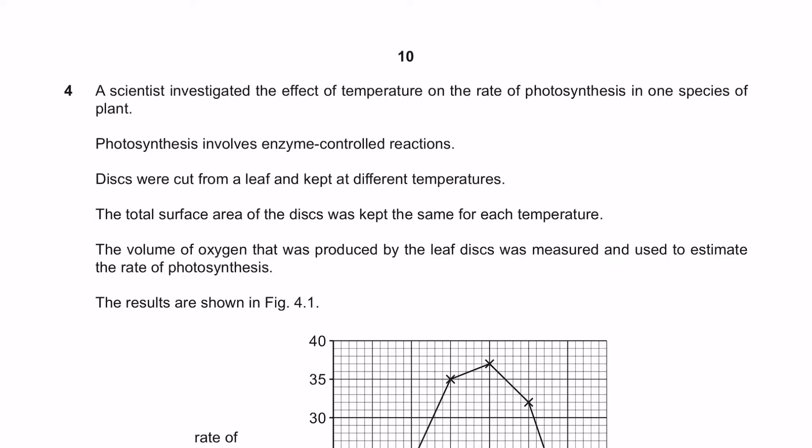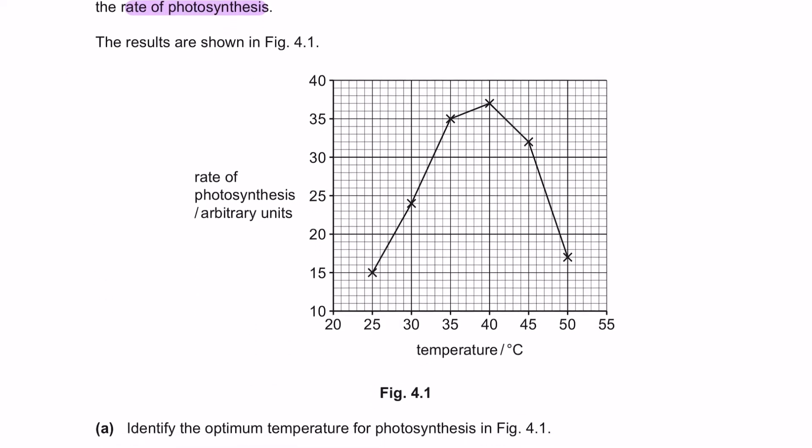Question 4. A scientist investigated the effect of temperature on the rate of photosynthesis in one species of plant. Photosynthesis involves enzyme-controlled reactions. Discs were cut from a leaf and kept at different temperatures. The total surface area of the disc was kept the same for each temperature. The volume of oxygen produced by the leaf disc was measured and used to estimate the rate of photosynthesis. The results are shown in figure 4.1.